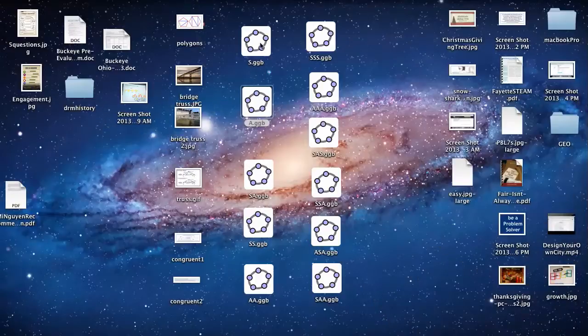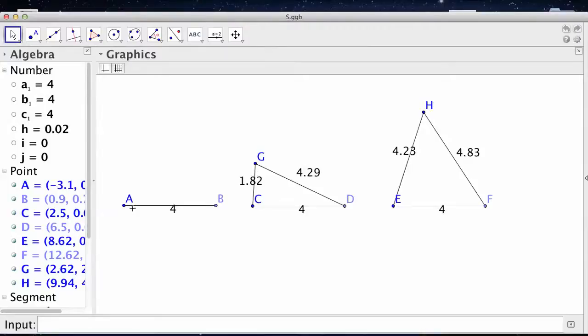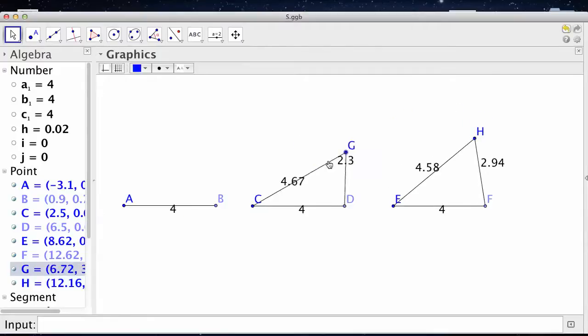How about knowing one side? Well, here, let's make a side four. Well, here, I made a triangle side four, and then the other side is 1.82, and the other side is 4.29. And I told somebody else, hey, make a triangle side four, and they made a completely different triangle. So one side is not enough to make congruent triangles.